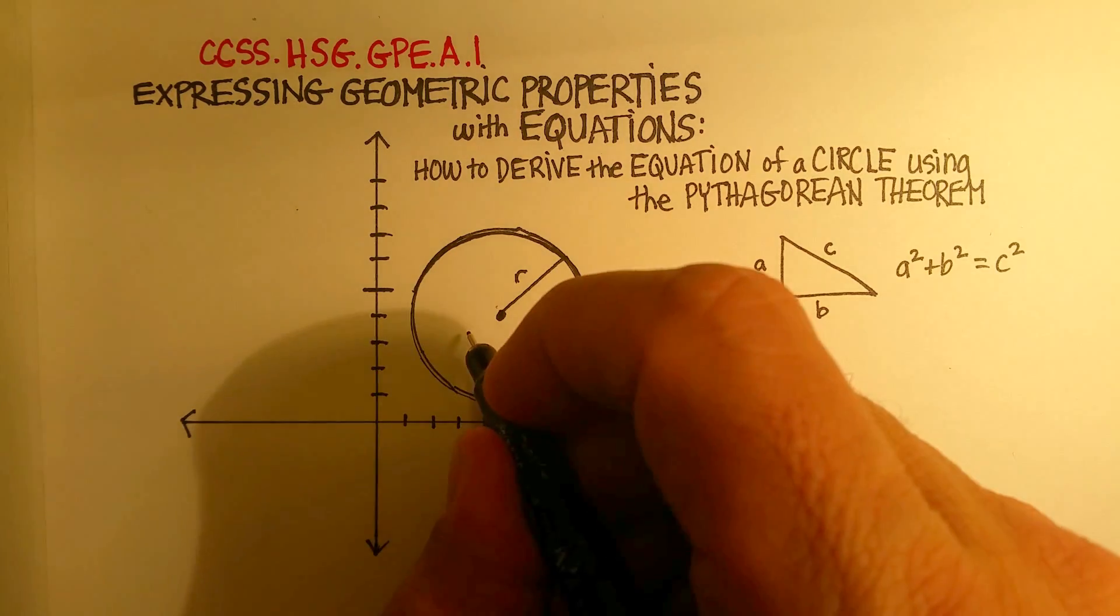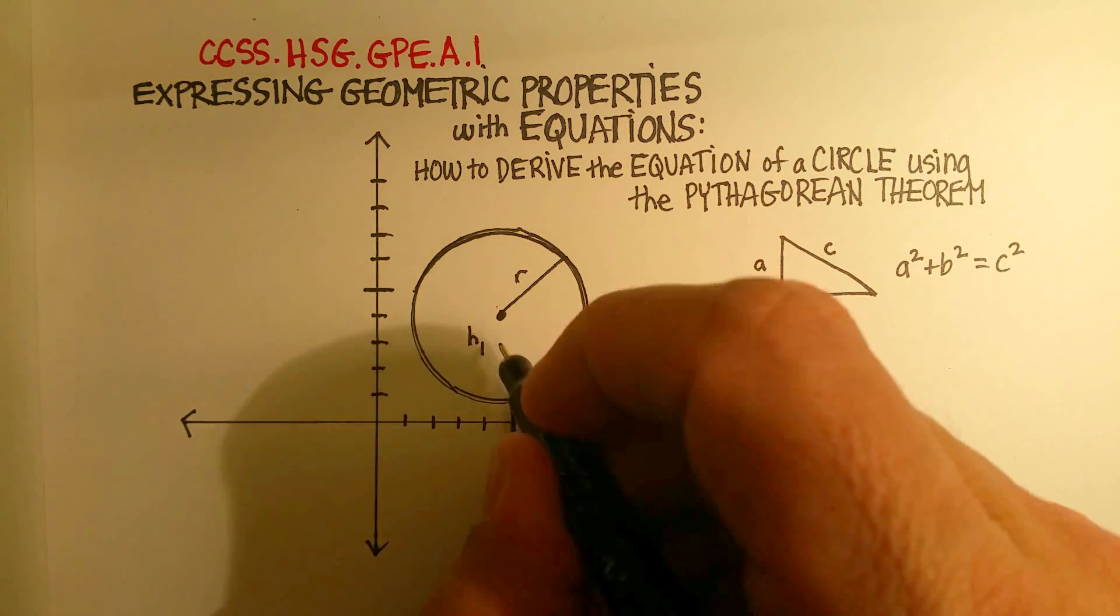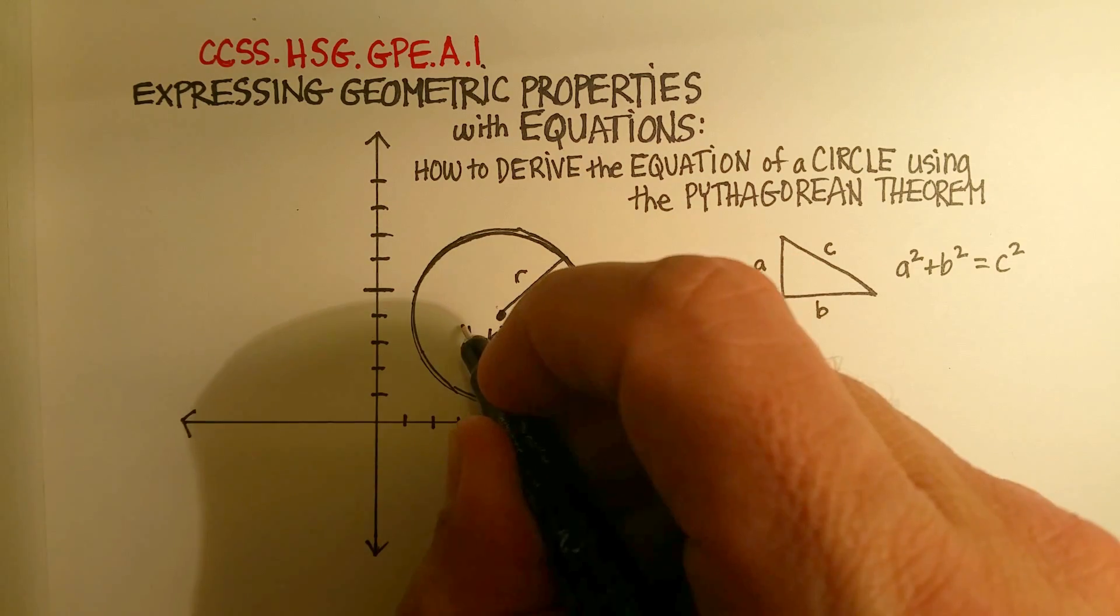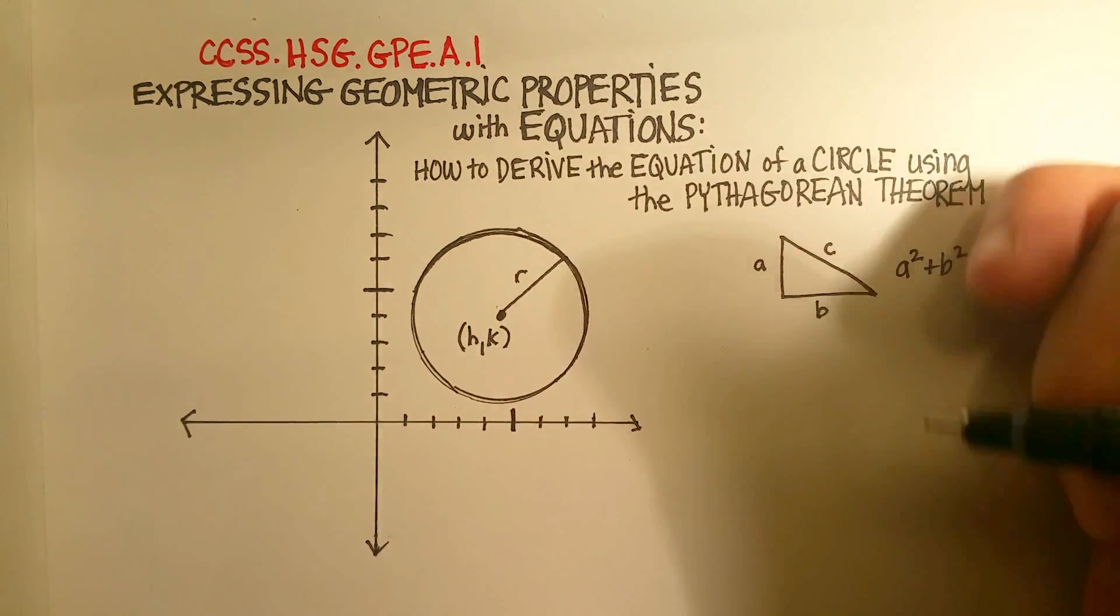So for this particular circle, we're going to call it h for the x value and k for the y value.